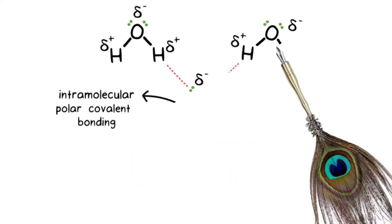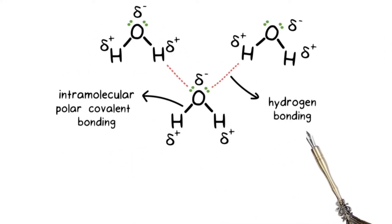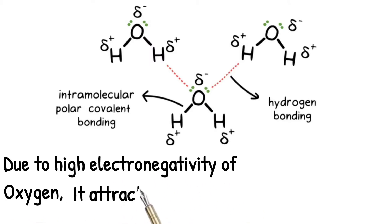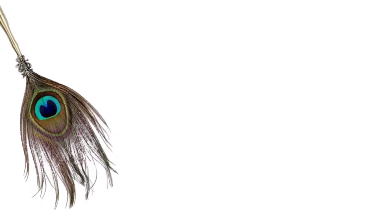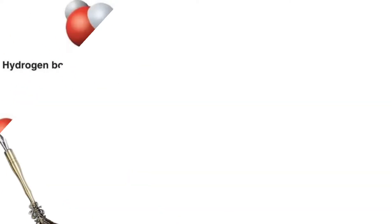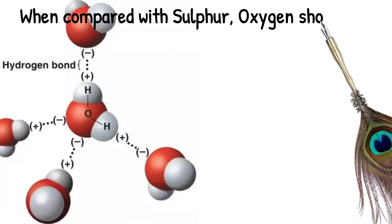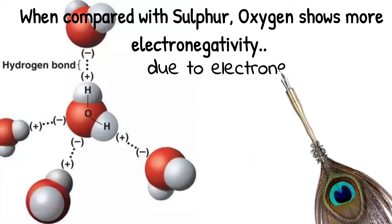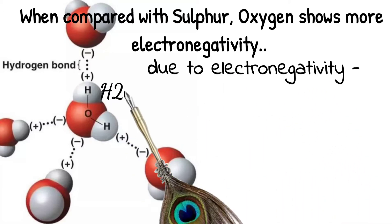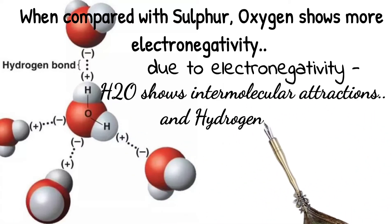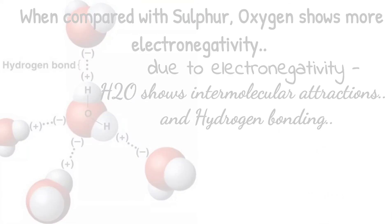Hydrogen bonding occurs due to the high electronegativity of oxygen, which attracts hydrogens. Compared with sulfur, oxygen shows much greater electronegativity, and due to this electronegativity, H2O shows strong intermolecular attractions and hydrogen bonding.